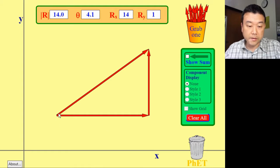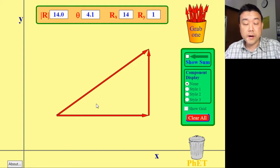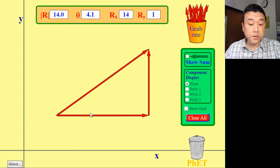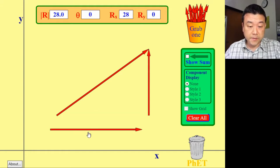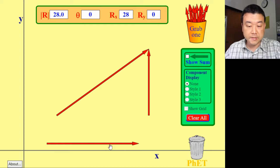And this vector has been represented in a special way. The two vectors that add up to this whole vector, they are in two perpendicular directions.